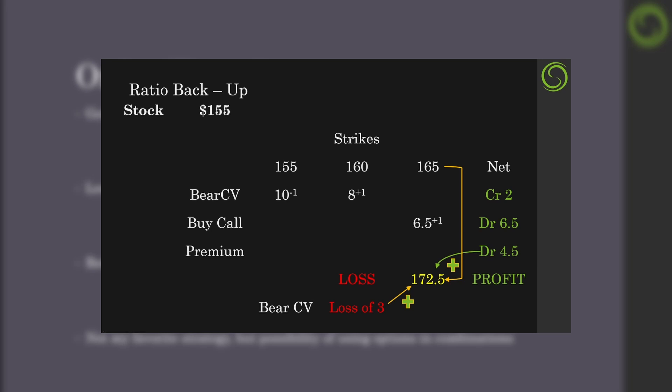There are different ways to set up this ratio back order — you can put the five-dollar spread of the bear call vertical in the money and you'll collect more premium, which is probably what you want to do. I just want to open up your mind to the different ways you can use options in combination to create better risk-managed and profitable trades.